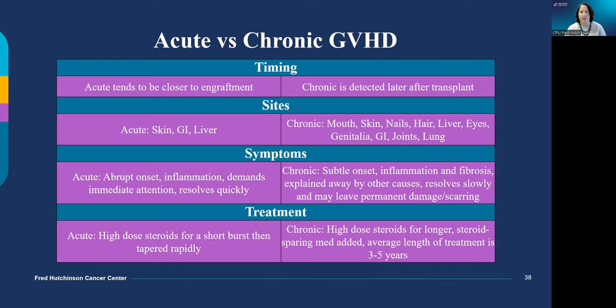Acute and chronic graft-versus-host disease look and act a little differently. To determine between them, we look at symptoms, not strictly the day after transplant the GVHD is detected. Acute GVHD tends to be closer to time of engraftment, has an abrupt onset, is more angry, and demands immediate attention. Chronic GVHD is typically first detected at least 75 days out from transplant; symptoms may be less obvious or explained away, with a more gradual or subtle onset, typically caused by inflammation and then fibrosis forming in the affected body system.